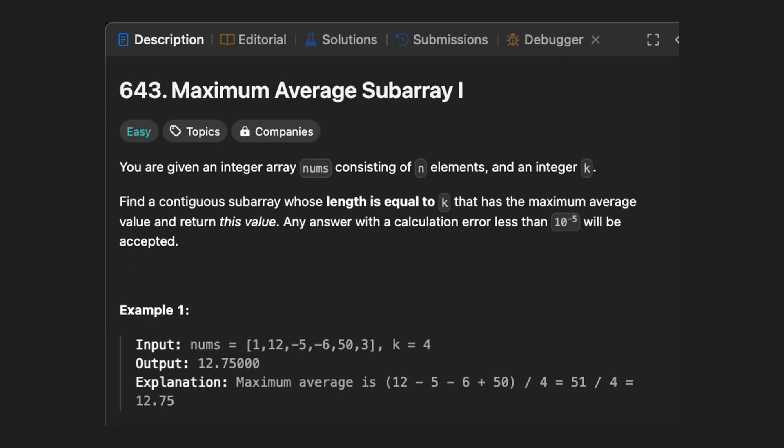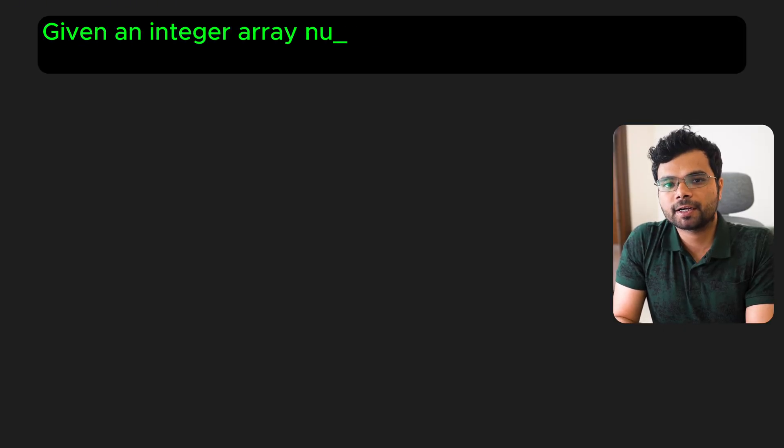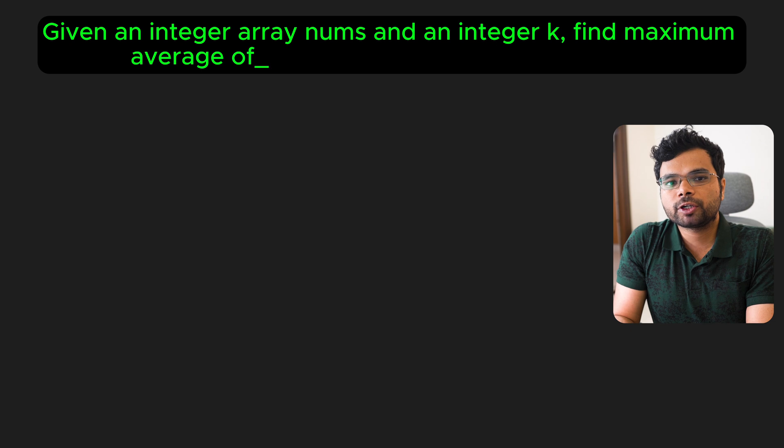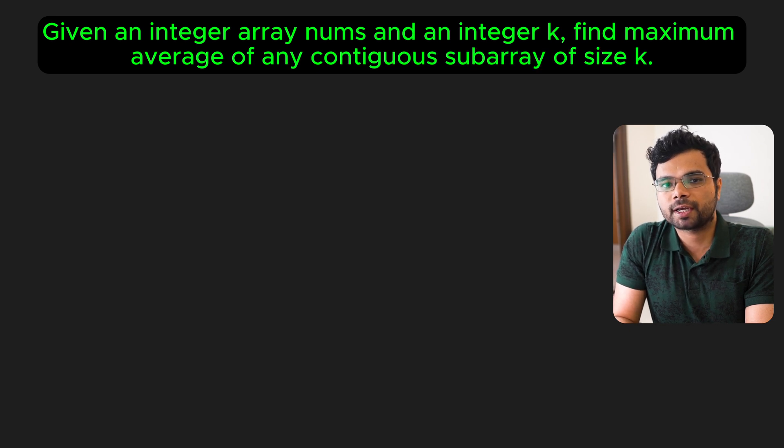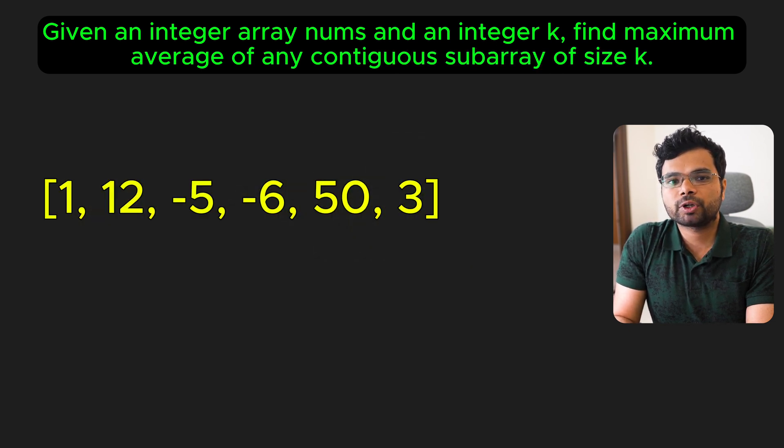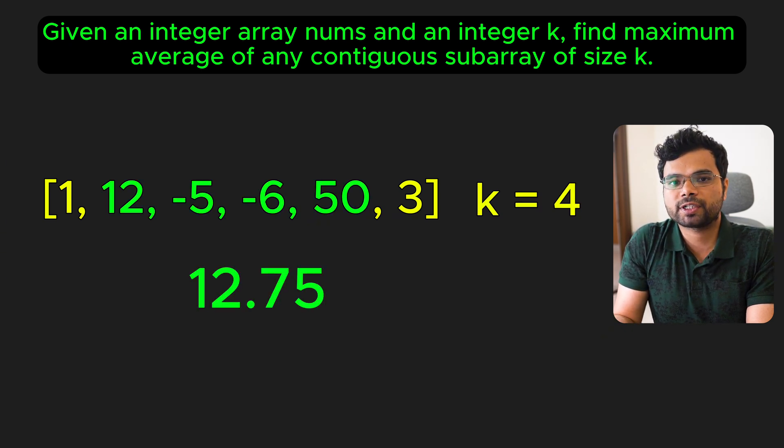First problem is LeetCode 643, maximum average sub-array 1. You are given an integer array nums and an integer k, and you need to find the maximum average of any contiguous sub-array of size k. For example, if the input is this and k is 4, the sub-array 12, -5, -6, 50 has the maximum average of 12.75.